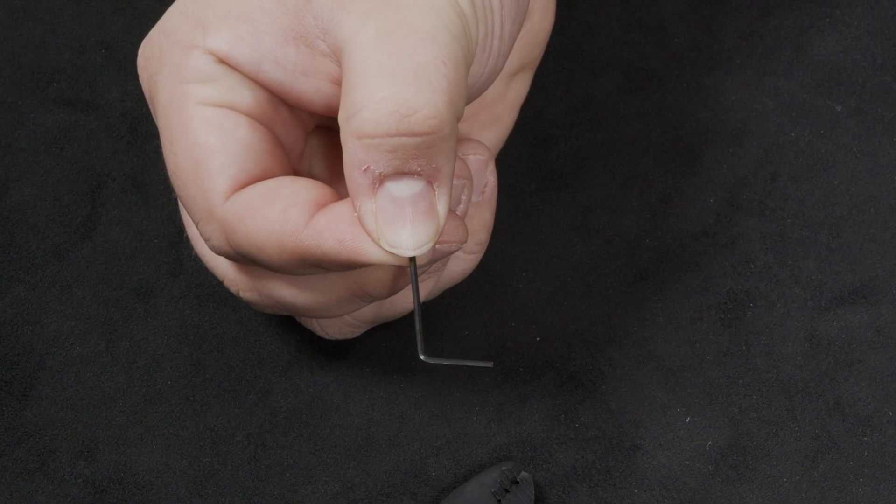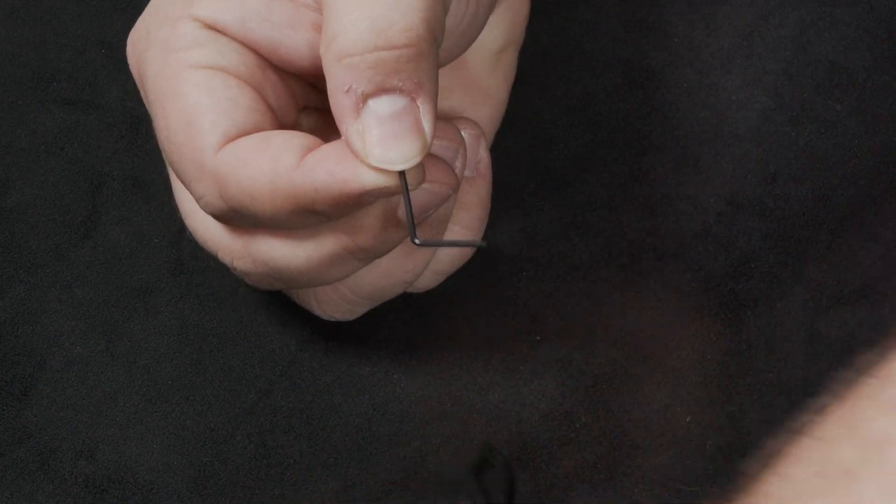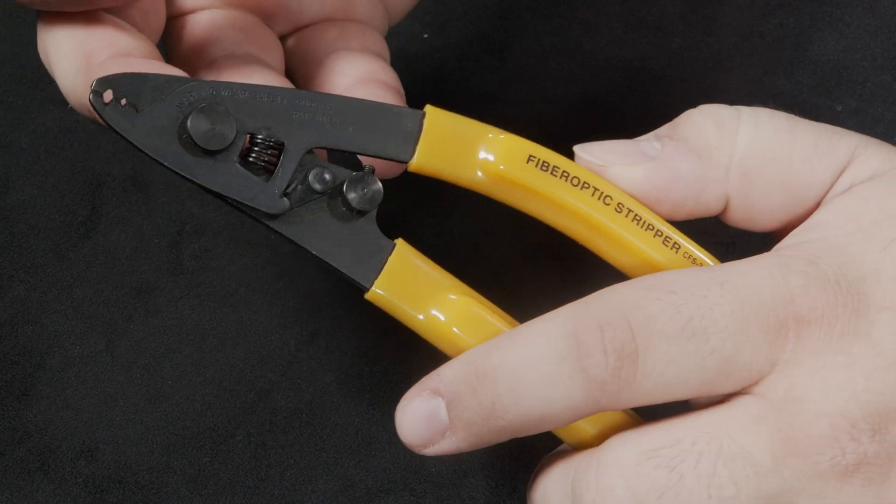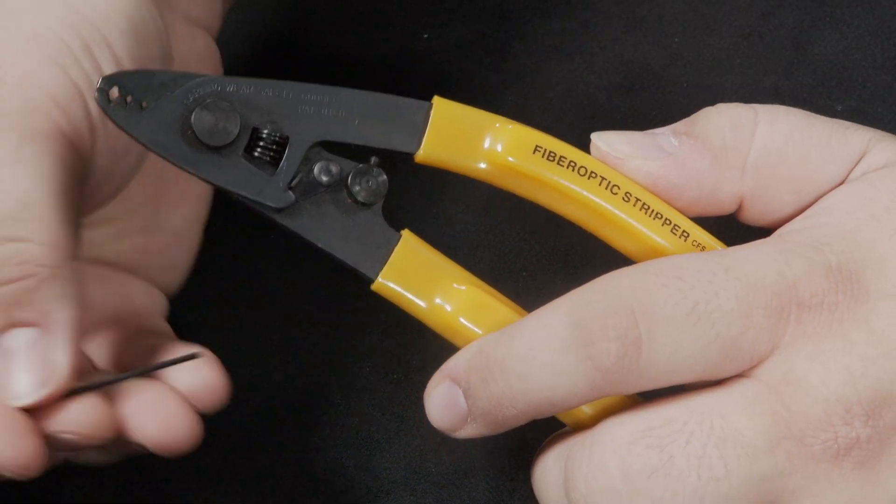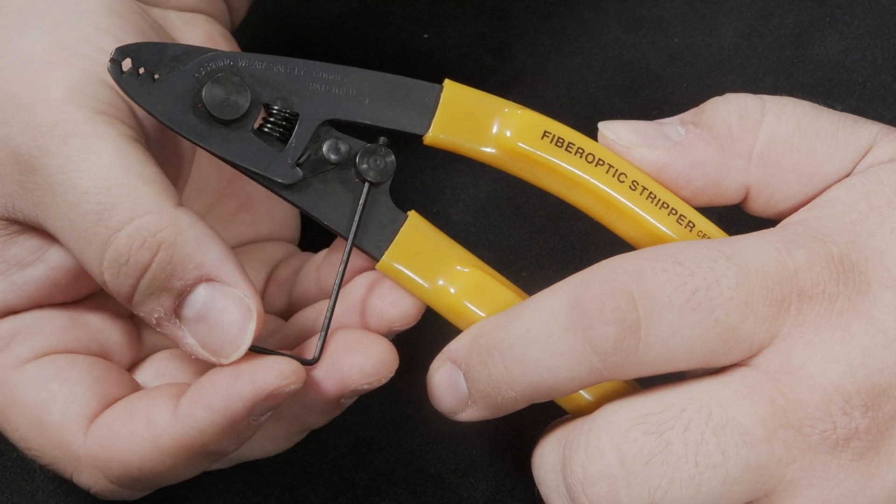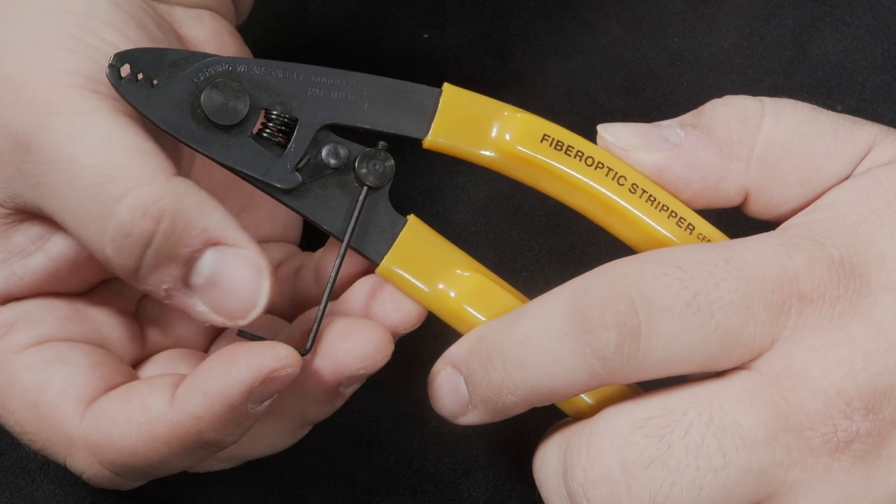The calibration tool for the fiber strippers is used to adjust the opening for the strippers using this set screw. Simply insert the calibration tool and turn the set screw to the desired diameter.